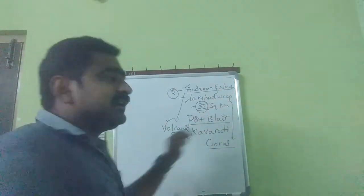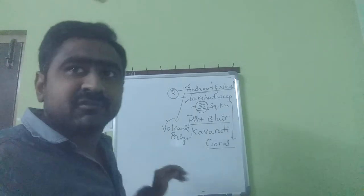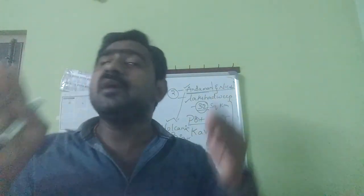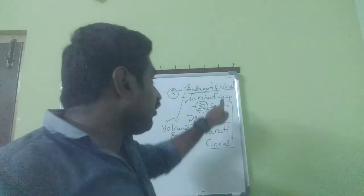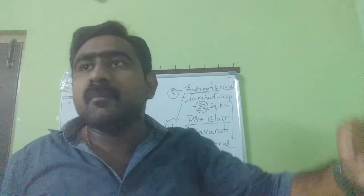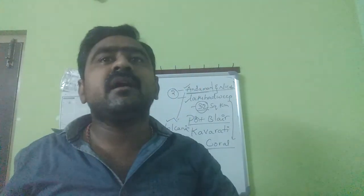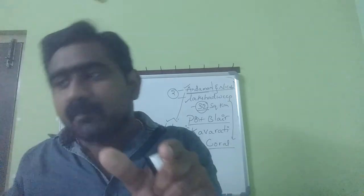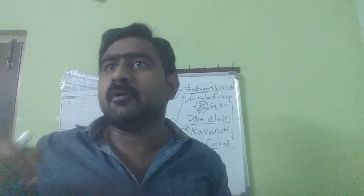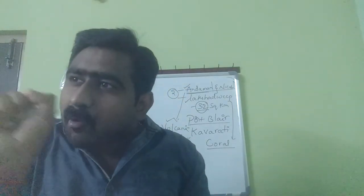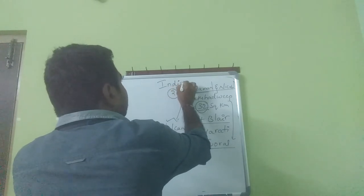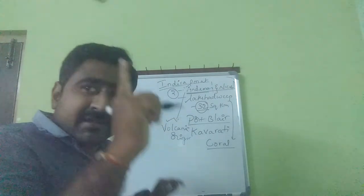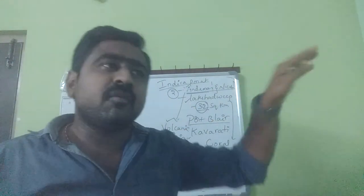One more important point: Andaman and Nicobar are two separate island groups together. Nicobar is considered the ending point of the Indian continent. From Jammu and Kashmir to Kanyakumari we generally define India, but the southernmost island point is Nicobar. The southernmost tip in Nicobar is called Indira Point (I-N-D-I-R-A).